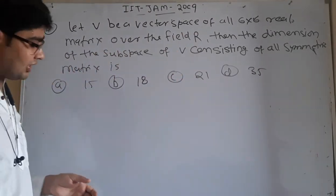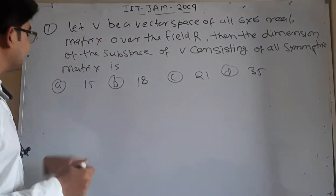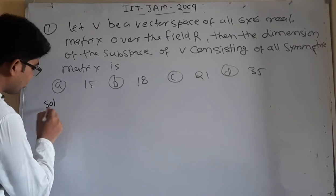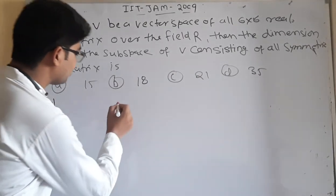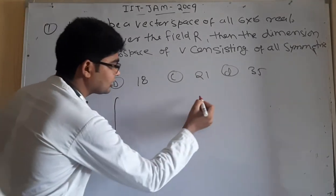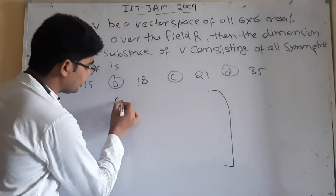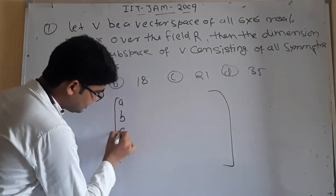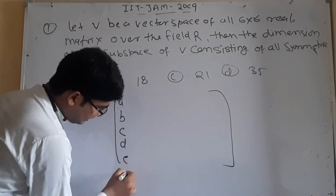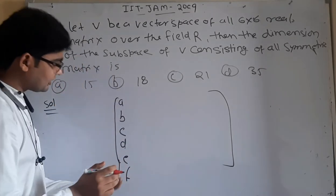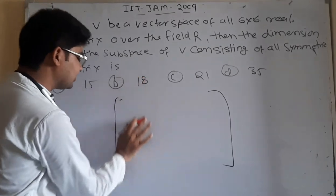This is the question. What do we need to do? We need to make a matrix which is symmetric and find its dimension. Here we can see a 6x6 matrix. If you want to make a matrix A, B, C, D, E, F, we can make a solution. Simple solution.